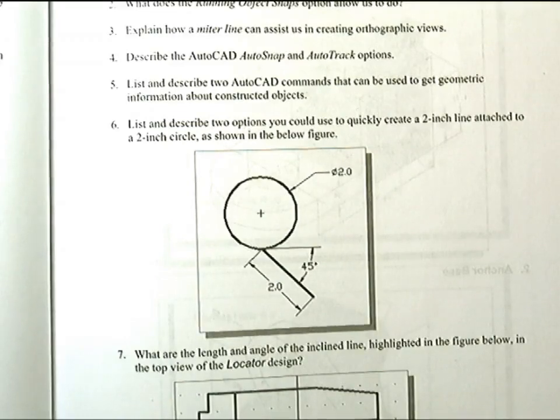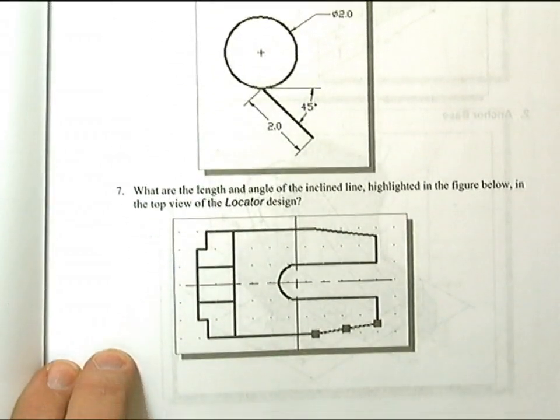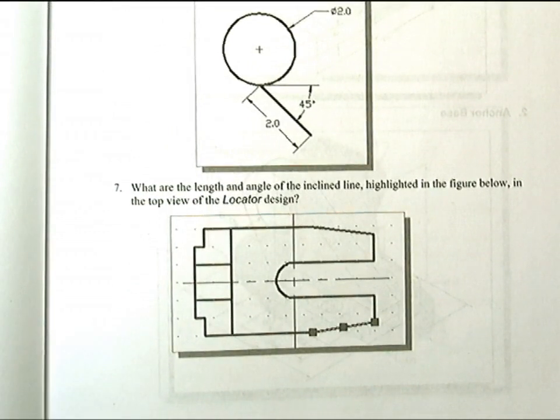Number seven: What are the length and angle of the inclined line highlighted in the figure below in the top view of the locator design you've done as a tutorial? The length of that line, when you check it, it should be one point seven six seven eight. And the angle would be eight degrees.